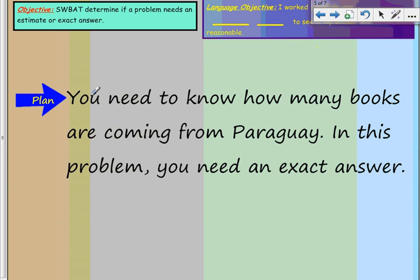So let's move on to the next stage here. So now we're looking at plan. So now we know by the reading skill, now we're going to plan. We're going to plan what we're going to do. Well, we need to know how many books are coming from Paraguay. In this problem, we would need that exact answer because we need to know how many books if we're going to cover them, which we already determined.